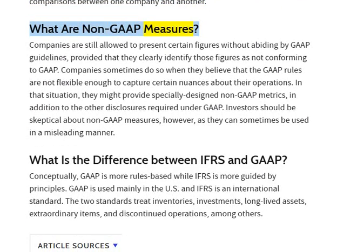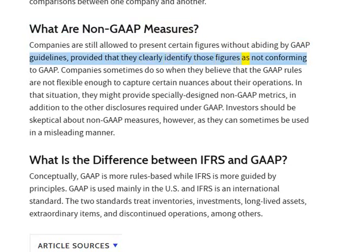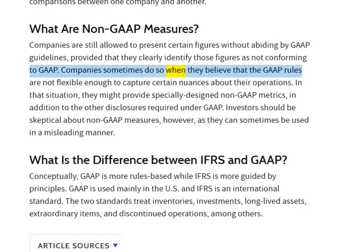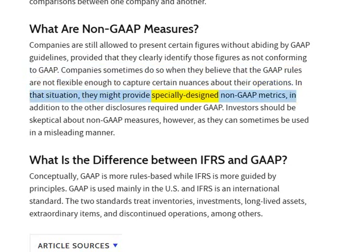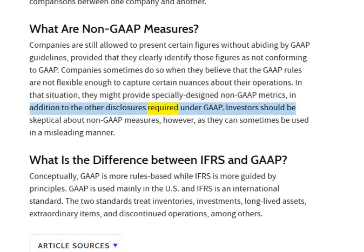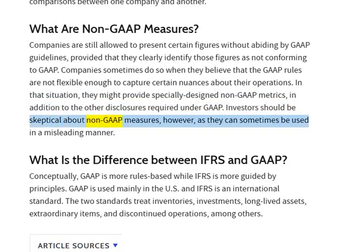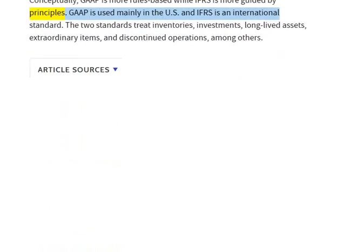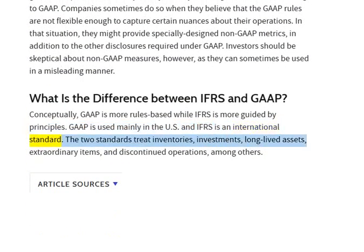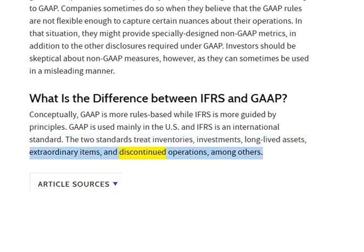What are non-GAAP measures? Companies are still allowed to present certain figures without abiding by GAAP guidelines, provided that they clearly identify those figures as not conforming to GAAP. Companies sometimes do so when they believe that the GAAP rules are not flexible enough to capture certain nuances about their operations. In that situation, they might provide specially designed non-GAAP metrics, in addition to the other disclosures required under GAAP. Investors should be skeptical about non-GAAP measures, as they can sometimes be used in a misleading manner. What is the difference between IFRS and GAAP? Conceptually, GAAP is more rules-based while IFRS is more guided by principles. GAAP is used mainly in the US and IFRS is an international standard. The two standards treat inventories, investments, long-lived assets, extraordinary items, and discontinued operations differently, among others.